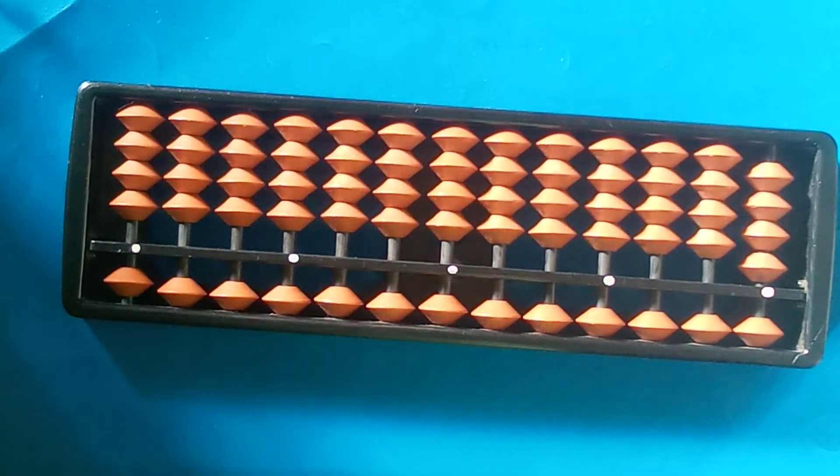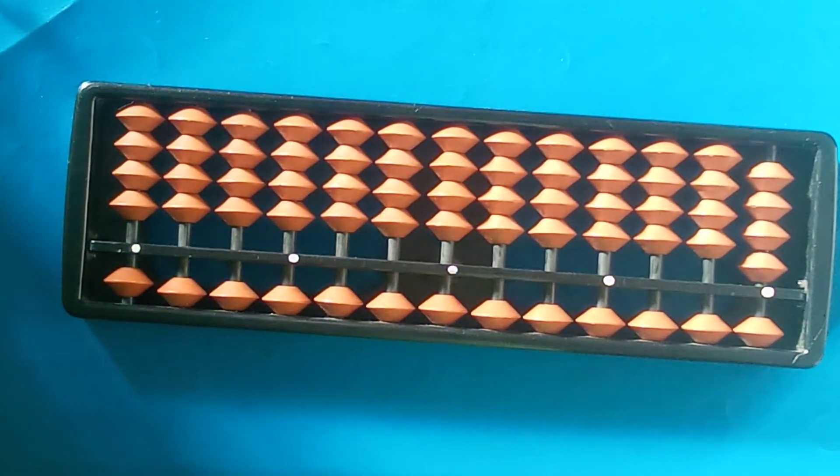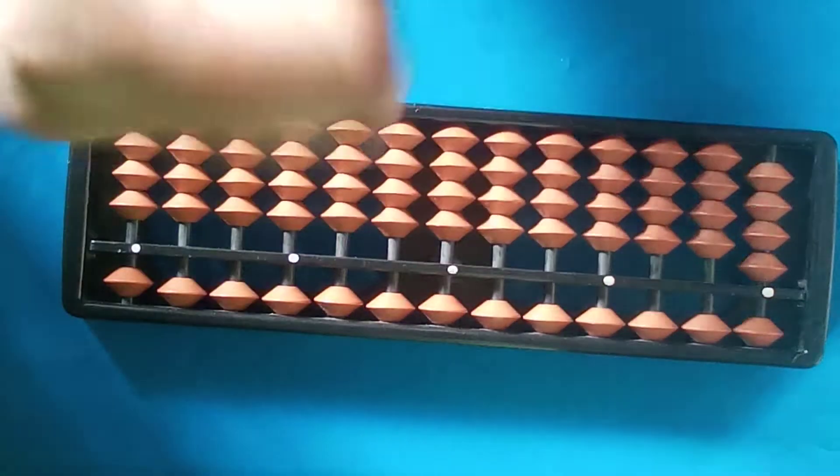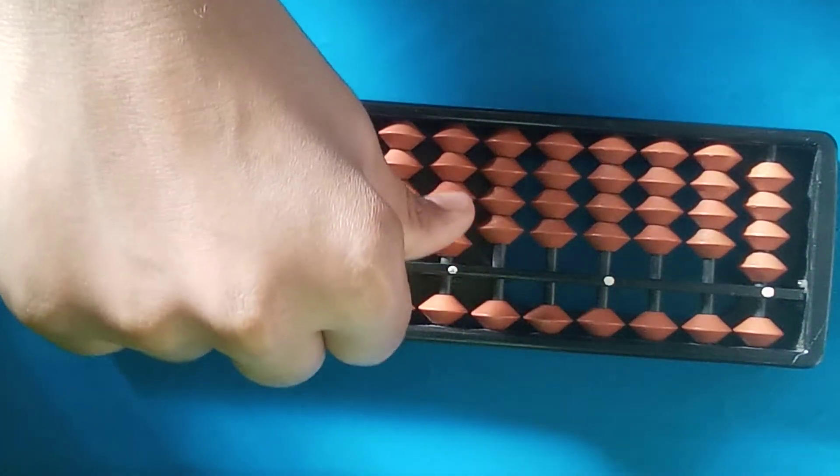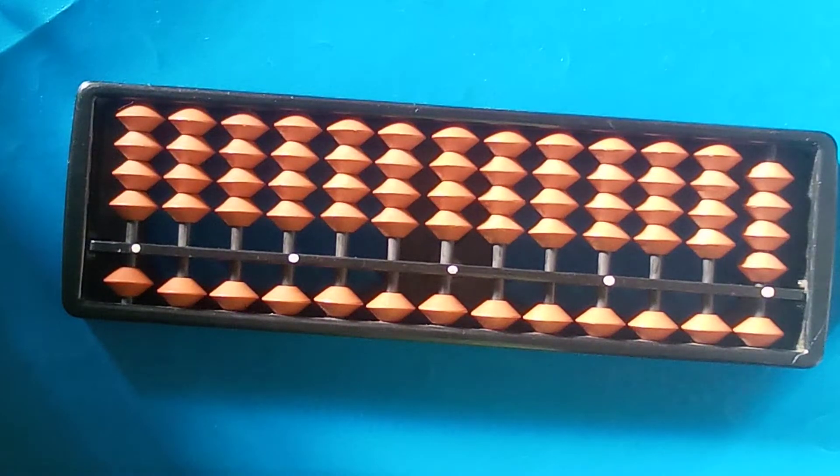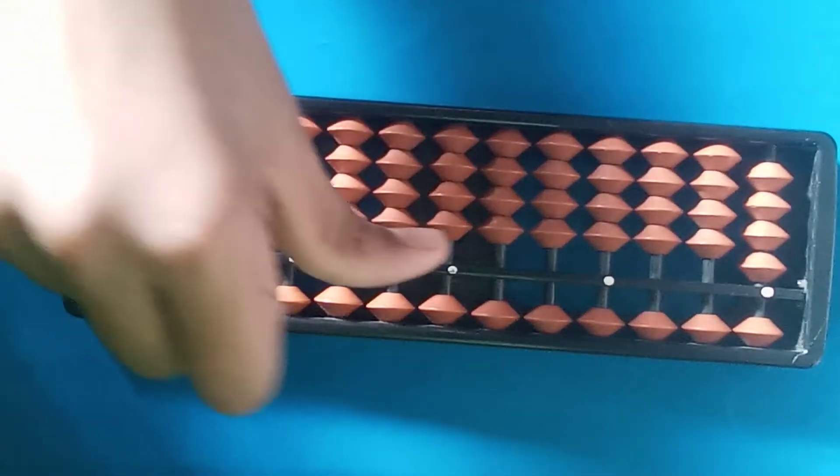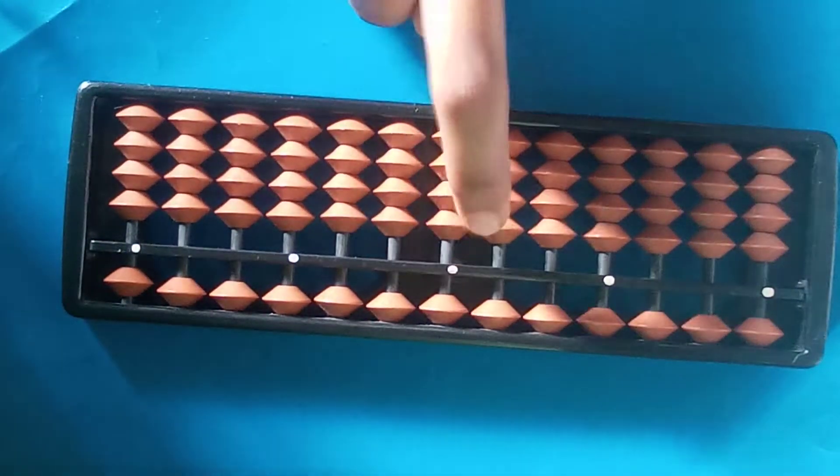So for example I will show one sum on the slate. First set two. So we have to set two, so first I am using thumb finger, one and two.